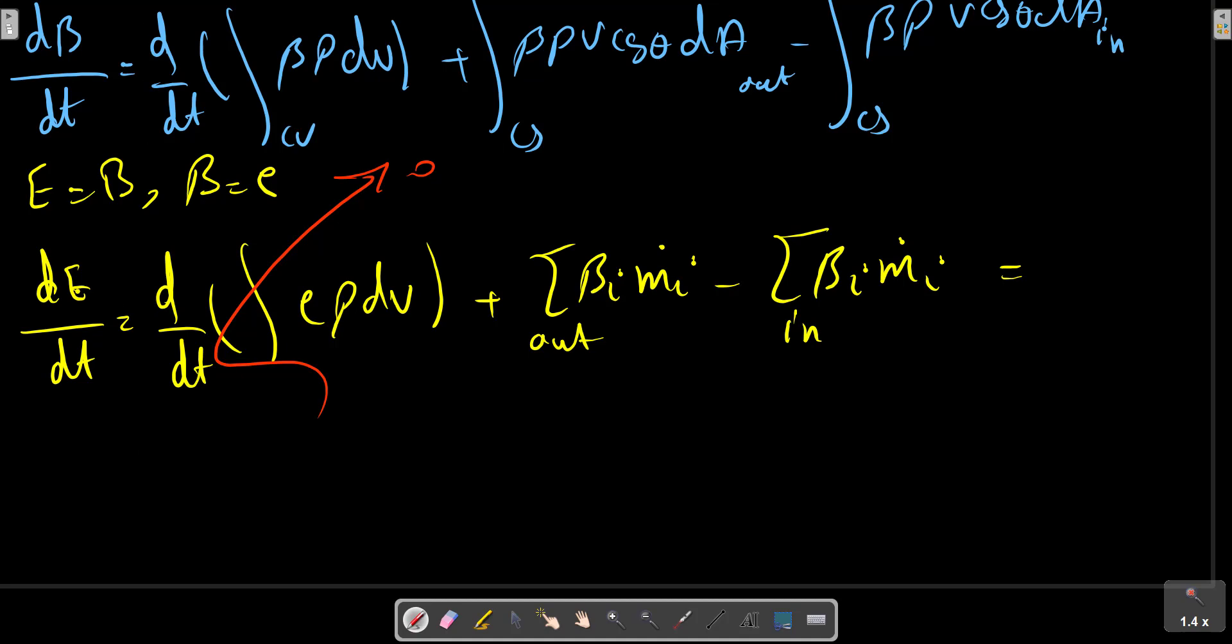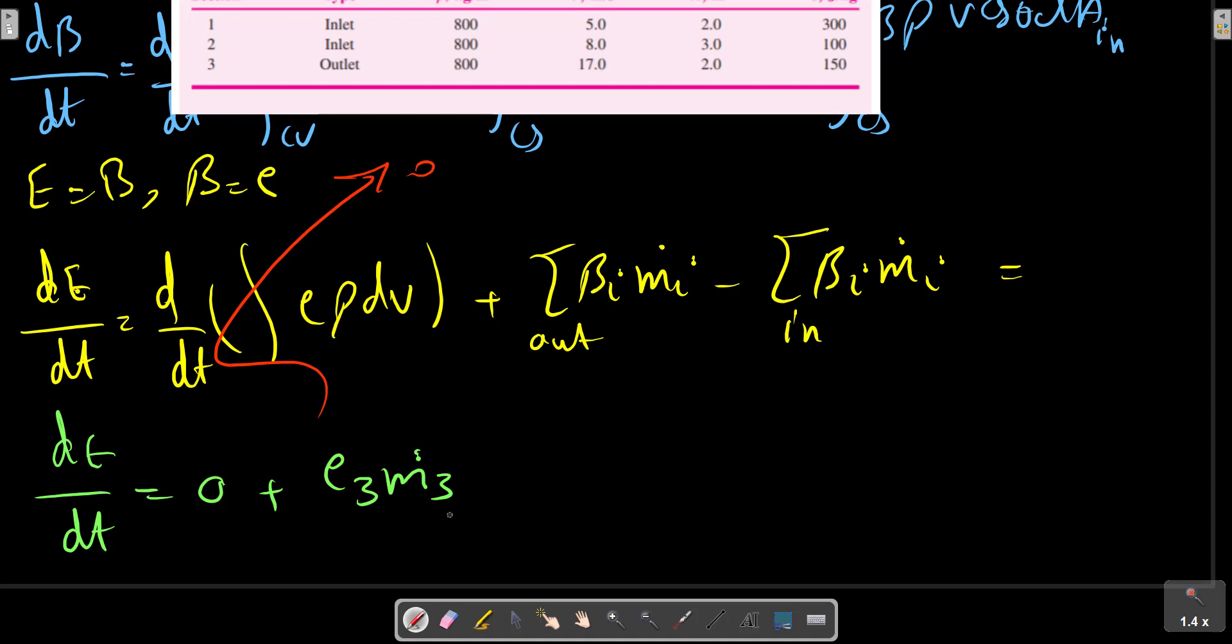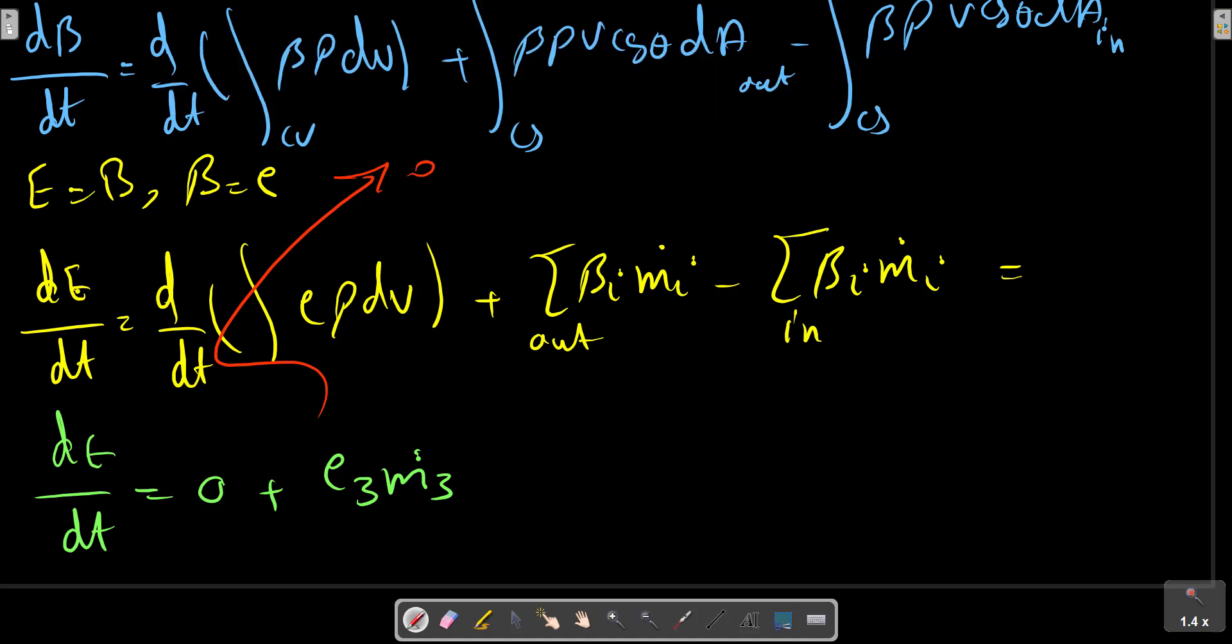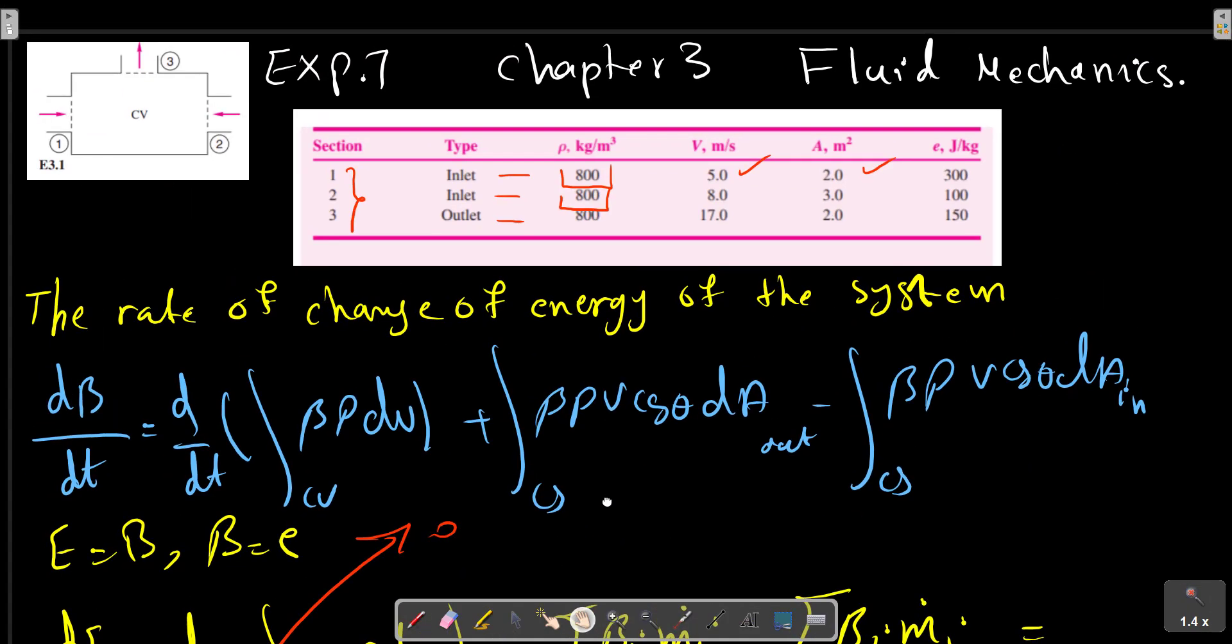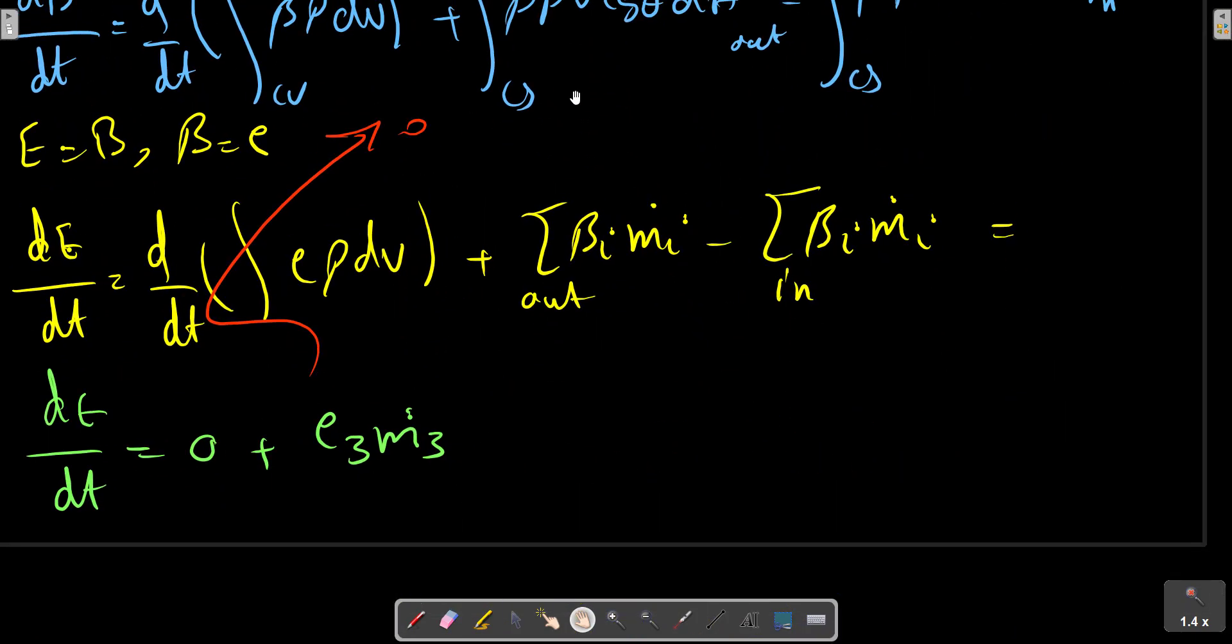Zero plus beta for the outlet. We have E_3 M dot_3 according to this picture, and two inlets: minus E_2 M dot_2 minus E_1 M dot_1 equals to...